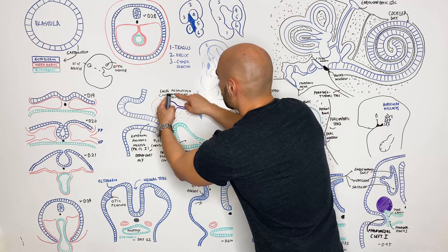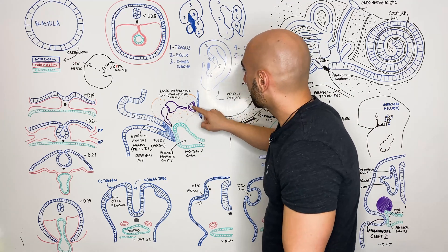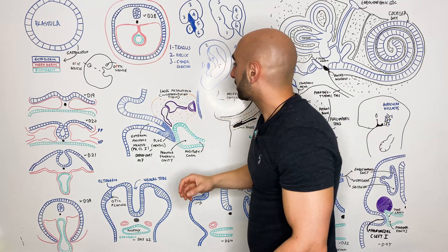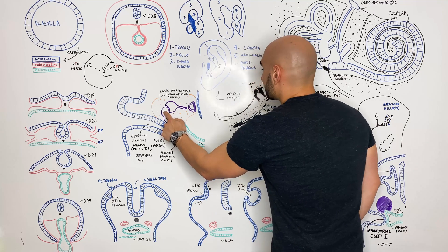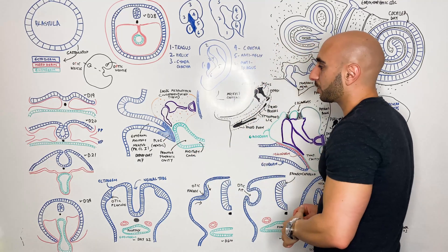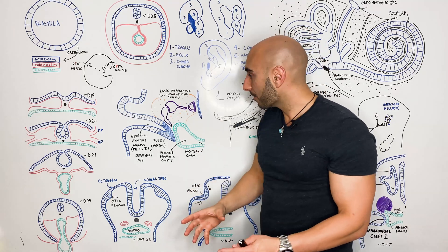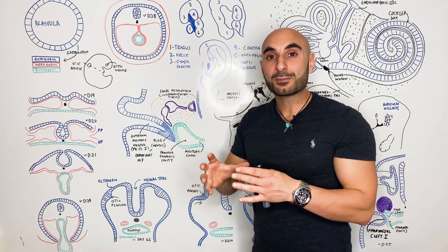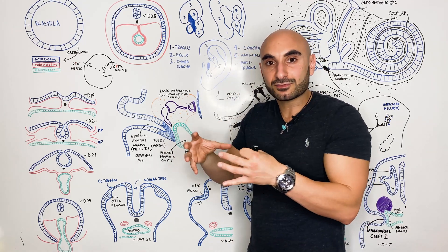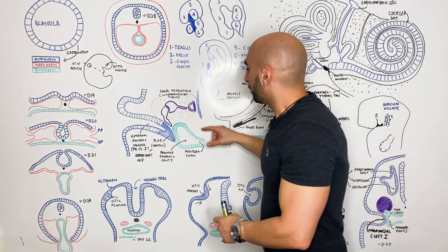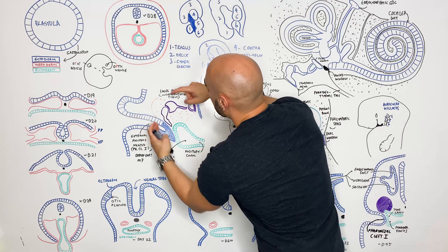Now focusing on the three ossicles — the malleus, incus, and stapes — surrounded by loose mesenchyme, which is undifferentiated tissue. The high-yield point is that the ossicles are derived from loose mesenchyme that becomes cartilage that will become the bones. Eventually all of the cartilage holding the bones, preventing their vibration and functioning, will disappear or degenerate, and the endoderm will fill the whole middle ear.